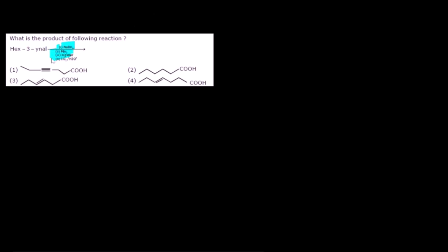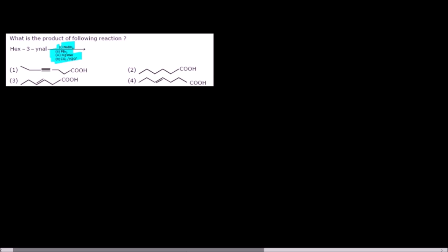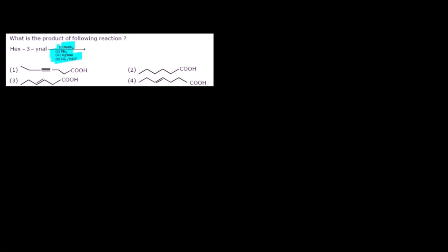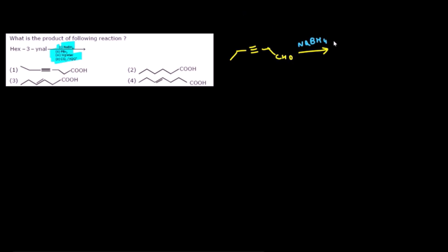The next question involves an organic reaction sequence starting with hex-3-yn-1-al (triple bond with CHO group). Step 1: Reaction with NaBH₄ (sodium borohydride) — NaBH₄ reduces only the aldehyde (CHO → CH₂OH) and does not touch the triple bond. The triple bond remains intact.